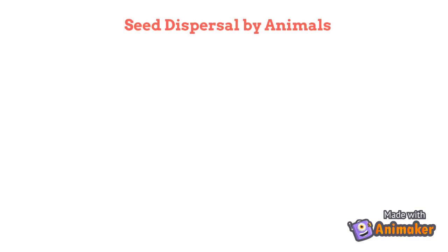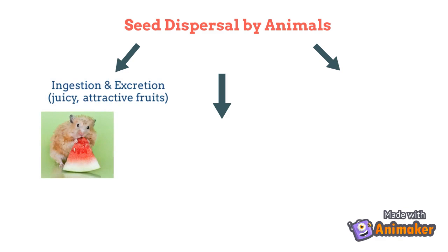Seed dispersal by animals can occur in following three ways. When animals eat fleshy fruits, they also consume seeds, and when they are done enjoying their meal, they move on miles. And when it's time to get rid of their wastes, they excrete. Excretion includes seeds which did not get digested.